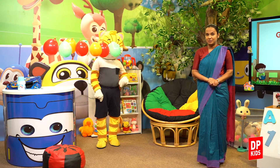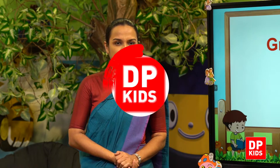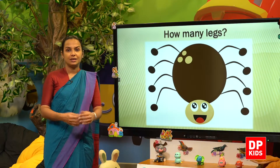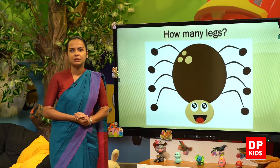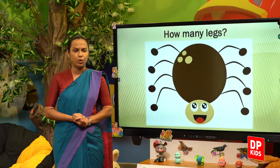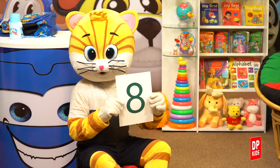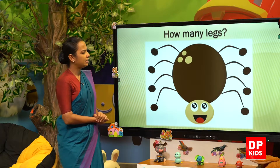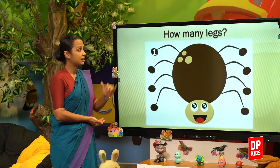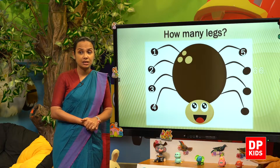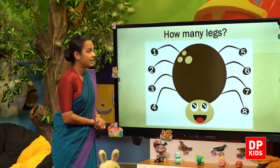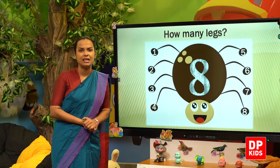So our next activity will be counting objects. Let's count objects using number eight. How many legs has he? One, two, three, four, five, six, seven, eight. Eight legs. Yes, the spider has eight legs.